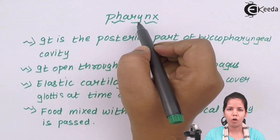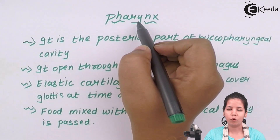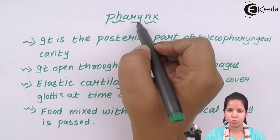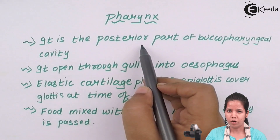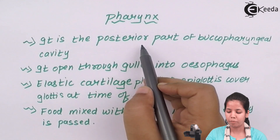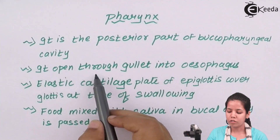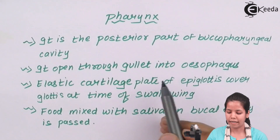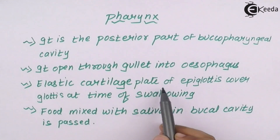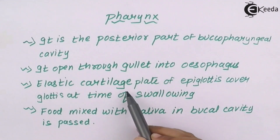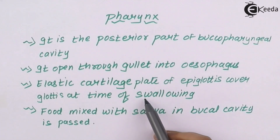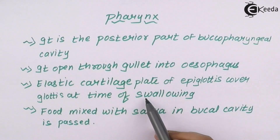Pharynx is a small organ situated just below your buccal cavity, or you can say the pharyngeal cavity. You can also say that it is located in the posterior part, or you can say in the downright part of your buccal pharyngeal cavity. It opens into a gullet into the esophagus, and there is a lid-like structure which is your epiglottis cartilage, and this epiglottis cartilage opens or closes at the time of swallowing or when you're eating food. Just beside that there is a nasopharyngeal cavity.